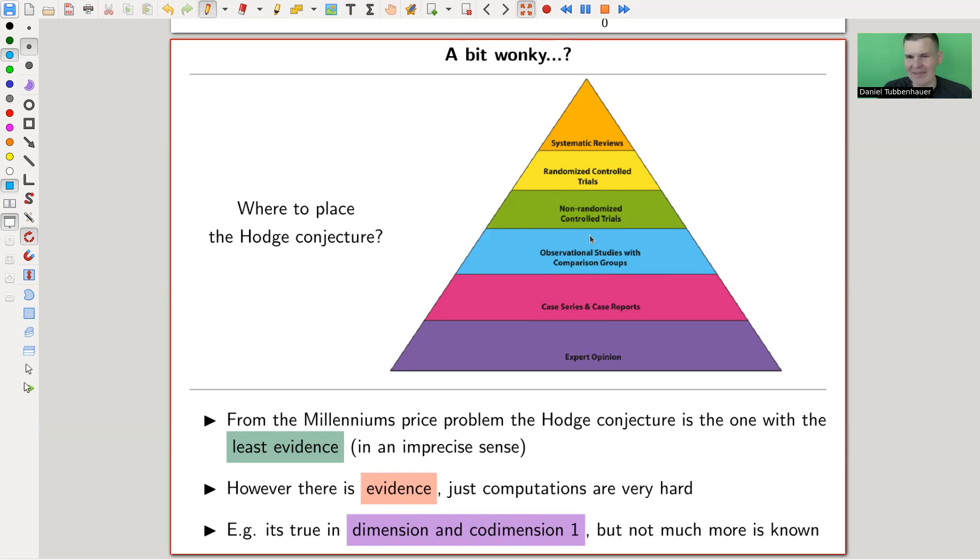So in mathematics, it's really bad at defining what that means. In other more real world studies, real world science, you have really a pyramid of how much evidence you have from expert opinion to systematic reviews. And somehow in mathematics, what I would like to do is I would like to place the Hodge conjecture somewhere here in my pyramid, and I would probably place the Riemann hypothesis way much higher. That's all I'm trying to say.